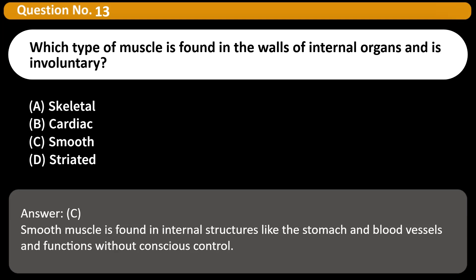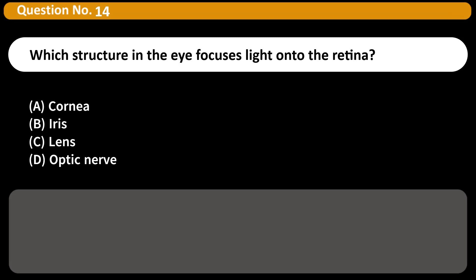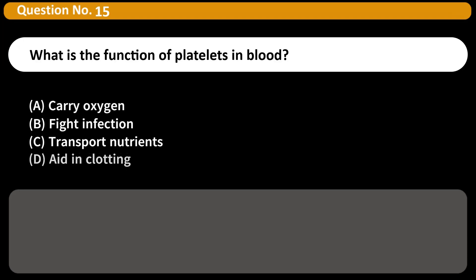Which structure in the eye focuses light onto the retina? A) Cornea, B) Iris, C) Lens, D) Optic nerve. Answer: C. The lens changes shape to focus light directly onto the retina for clear vision.